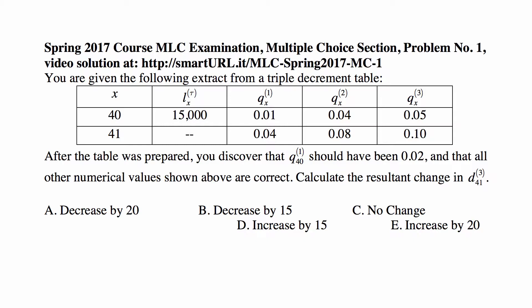In this problem, you are given the following extract from a triple decrement table. You have two ages: X is 40 and then 41. At age 40, there are 15,000 people in the population. And there are observed probabilities of dying. Remember, these are the observed, the number of people we see leaving the group due to decrements one, two, and three.